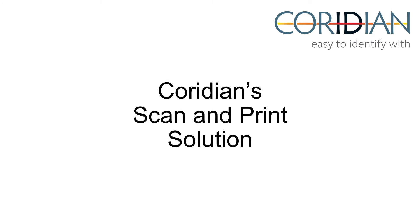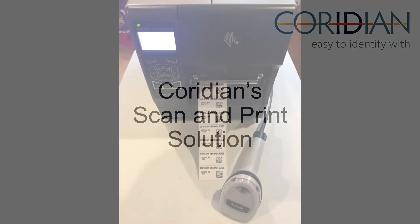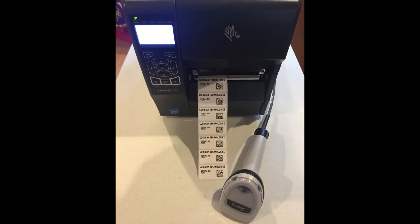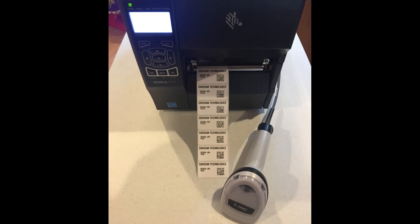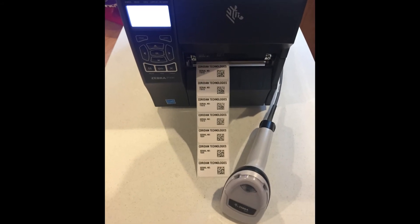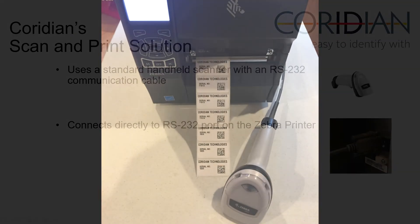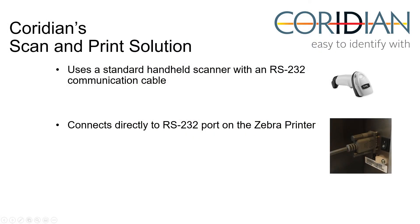That brings us to the Coridian Scan and Print Solution. The Coridian Scan and Print Solution uses a standard handheld scanner with an RS-232 interface cable connected directly to the RS-232 port on the Zebra printer. Every time a label is scanned, a new label will be generated on the printer.